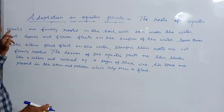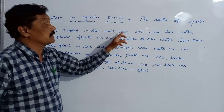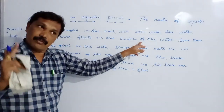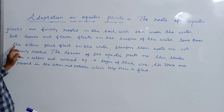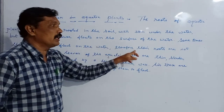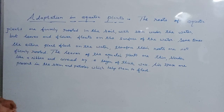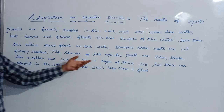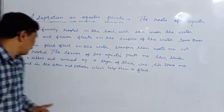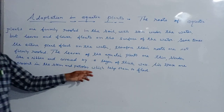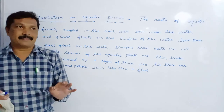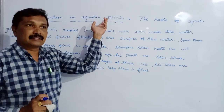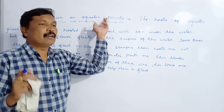The first: the roots of aquatic plants are firmly rooted in the soil which stay under the water, but leaves and flowers float on the surface of water. Second: sometimes the entire plant floats on the surface of the water, therefore their roots are not firmly rooted. The leaves of aquatic plants are thin and slender like a ribbon and covered with a layer of thick wax. Air spaces are present in the stem and petioles which help them to float on the water. This was adaptation in aquatic plants which help them to survive in their surroundings.